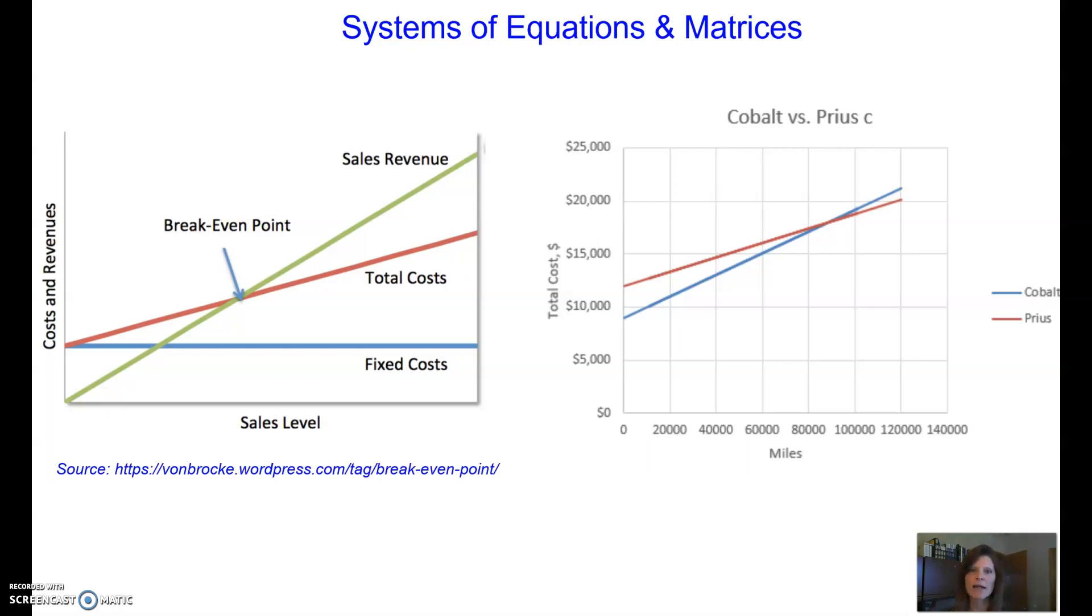The first graph has a red line representing or modeling the cost of manufacturing a particular item, while the green line is representing and modeling the revenue, how much money we're bringing in from selling those items. Where those two cross is called the break-even point.